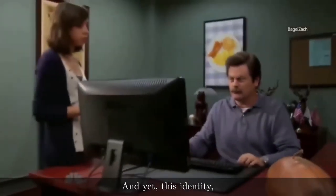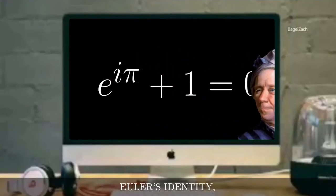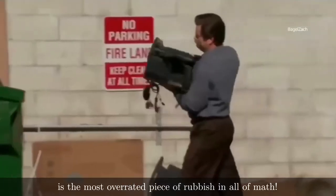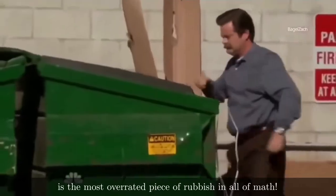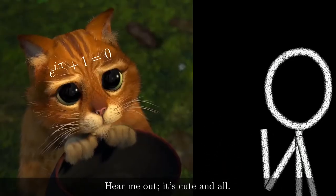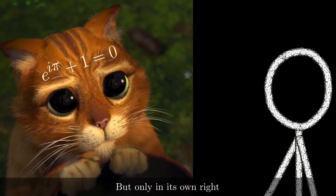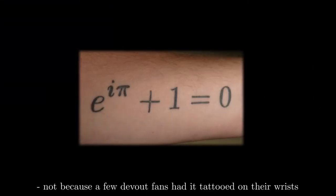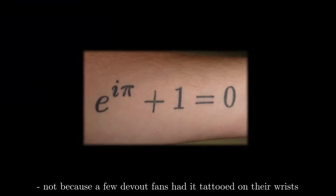And yet this identity, Euler's identity, is the most overrated piece of wish in all of nature. Hear me out. It's cute and all, but only in its own right. Not because a few devout fans had it tattooed on their wrists.